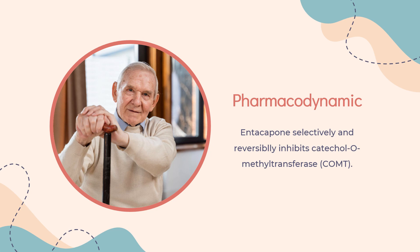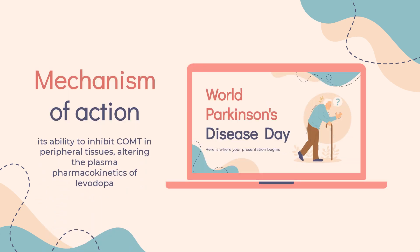In the presence of a decarboxylase inhibitor, COMT becomes the major metabolizing enzyme for levodopa, catalyzing it to 3-methoxy-4-hydroxy-L-phenylalanine (3-OMD) in the brain and periphery. The mechanism of action of Entacopone is believed to be through its ability to inhibit COMT in peripheral tissues, altering the plasma pharmacokinetics of levodopa.